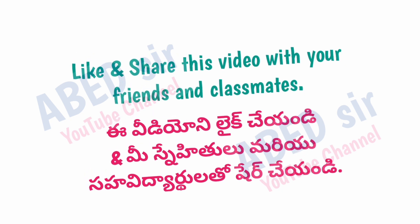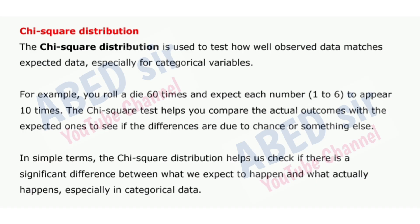Next important short question: Chi-square distribution. The chi-square distribution is used to test how well observed data matches expected data, especially for categorical variables. For example, you roll a die 60 times and expect each number 1 to 6 to appear 10 times — the chi-square test helps you compare the actual outcomes with the expected ones to see if the differences are due to chance or something else. In simple terms, the chi-square distribution helps us check if there is a significant difference between what we expect to happen and what actually happens, especially in categorical data.